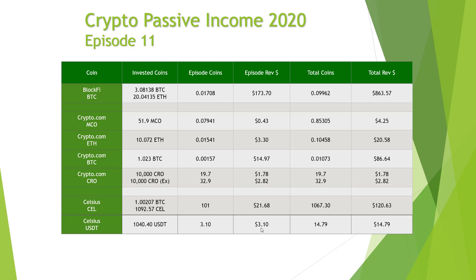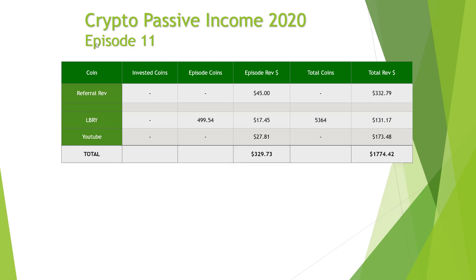The Celsius USDT loan earned 3.1 coins - obviously tied to the dollar, so $3.10. That's a decent update. Then we've got a final table showing referral revenues. I haven't backdated this to previous updates, but I have adjusted the total revenue figure so referrals are now taken out of the individual crypto interest accounts like BlockFi, Celsius, and Crypto.com.